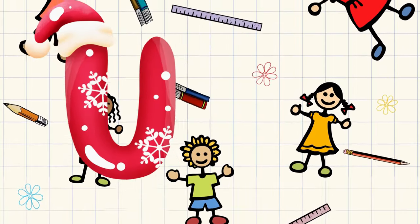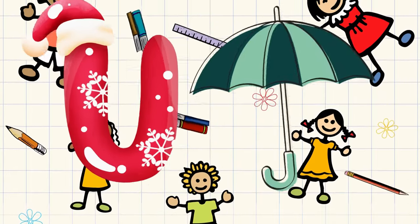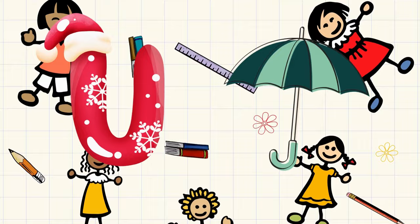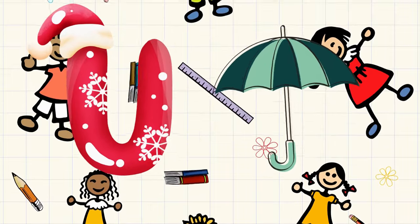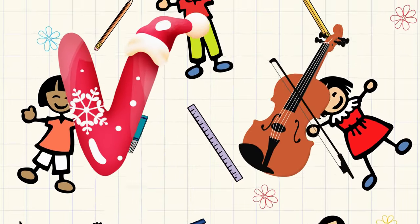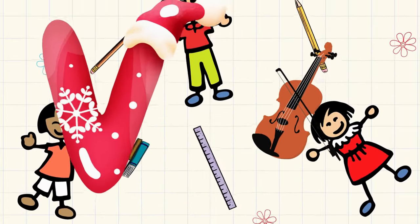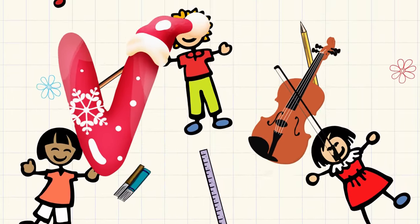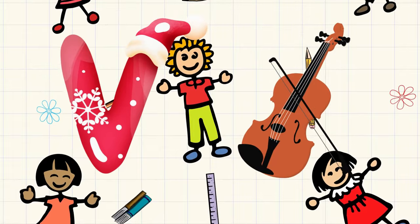U is for umbrella, u-u-umbrella. V is for violin, v-v-violin.